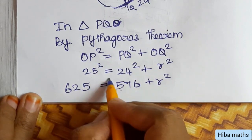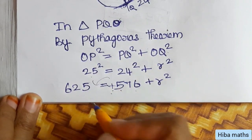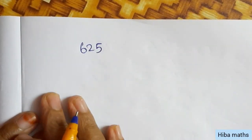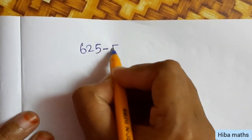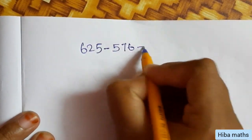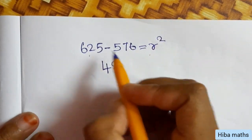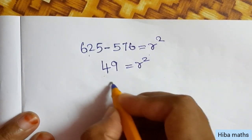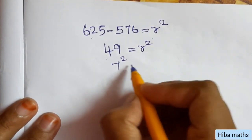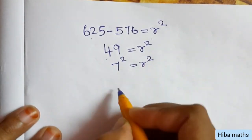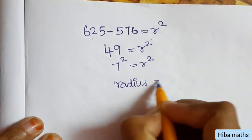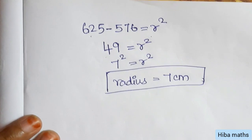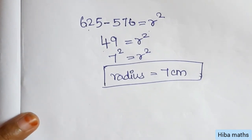In the next step: R squared equals 625 minus 576, which equals 49. And 49 is equal to 7 squared. Therefore, radius R equals 7 centimeters. So if you understand that, it is very easy.